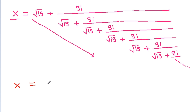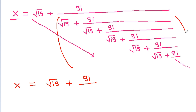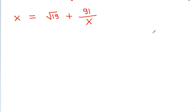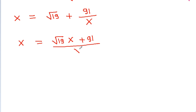So x is equal to a square root of 19 plus 91 by, and if we see from here to here, then it is a square root of 19 plus 91 by x. And if we cross multiply,